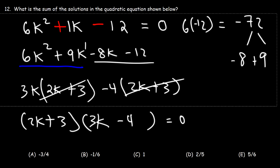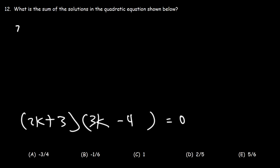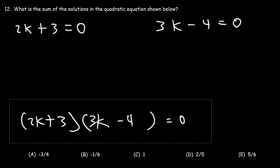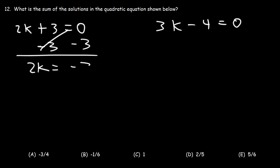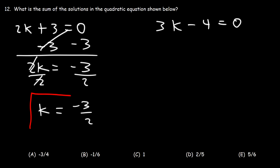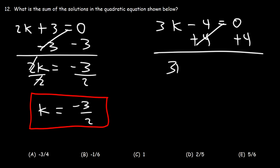Let's set each factor equal to 0. We have 2k plus 3 equals 0 and 3k minus 4 equals 0. For the first: subtract 3 from both sides to get 2k equals negative 3, then divide by 2, so k equals negative 3 over 2. For the second: add 4 to both sides to get 3k equals 4, then divide by 3, so k equals 4 over 3.